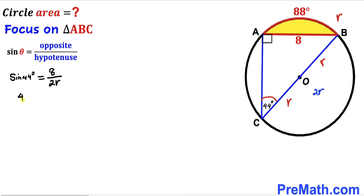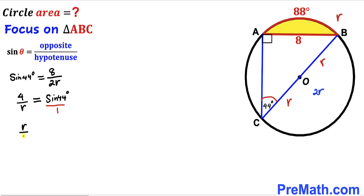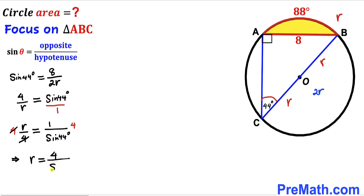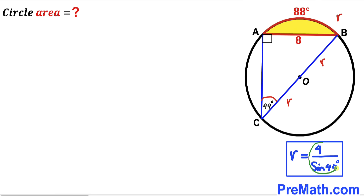So we can write: 4 divided by r equals sine of 44 degrees. Flipping both sides gives r divided by 4 equals 1 divided by sine of 44 degrees. Multiplying both sides by 4 to isolate radius r, we get r equals 4 divided by sine of 44 degrees.